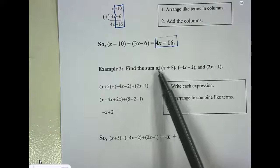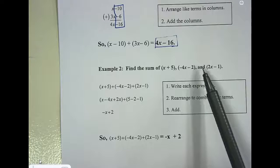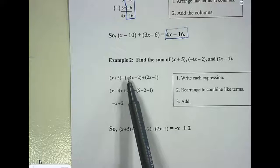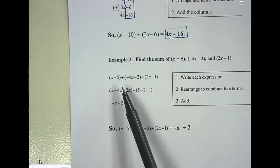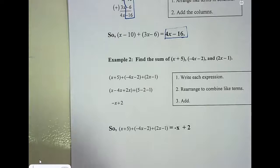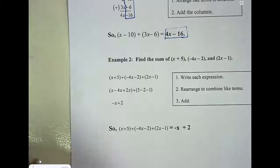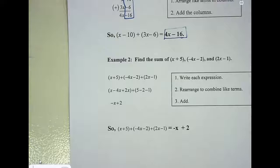This is the way I prefer to do it. Find the sum of x plus 5, and to that if it's the sum we're adding negative 4x minus 2, and then we're going to add 2x minus 1. So we rewrite it as x plus 5 plus negative 4x minus 2 plus 2x minus 1. Then we can just rearrange since we're adding. We know that adding is commutative. What does commutative property mean? We can change the order of the numbers as long as we make sure that this sign in front of it goes with it.